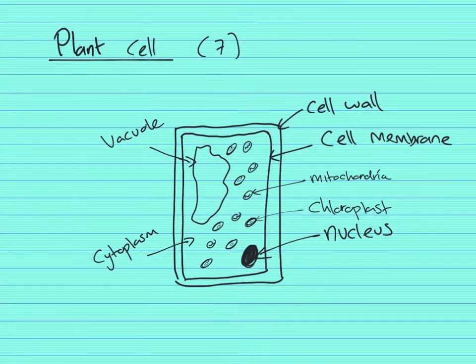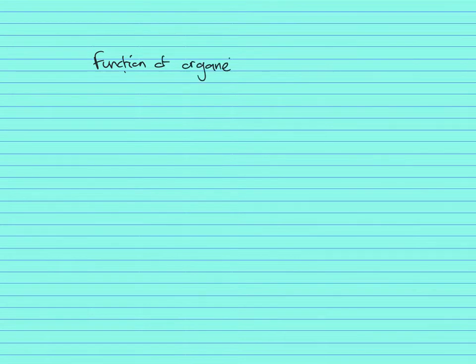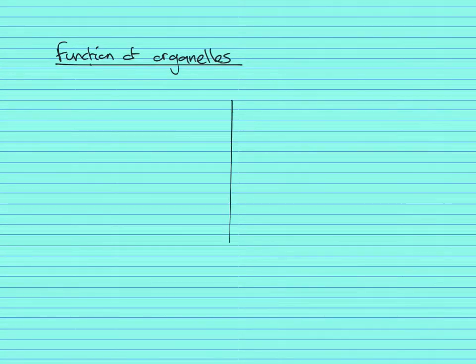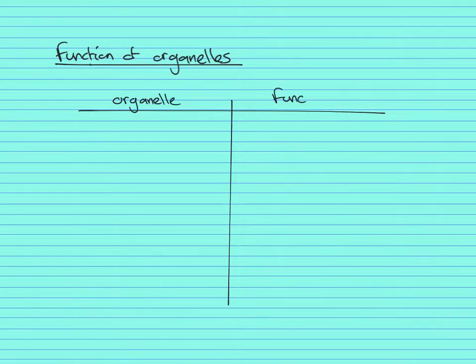On the next slide I'm going to show you what these things do. Get a ruler and write the subtitle 'Function of Organelles' — underline it. Draw a two-column table: one column for 'Organelle' and one column for 'Function.'